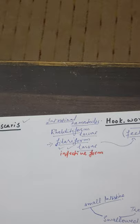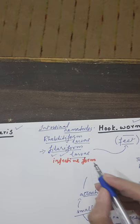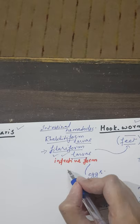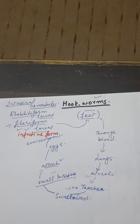In the small intestine, the hookworms attach to the intestinal wall and release eggs. The eggs pass out into the environment. They hatch and first change into the rhabditiform larvae, then change into the filariform larvae. This completes the life cycle of the hookworm.